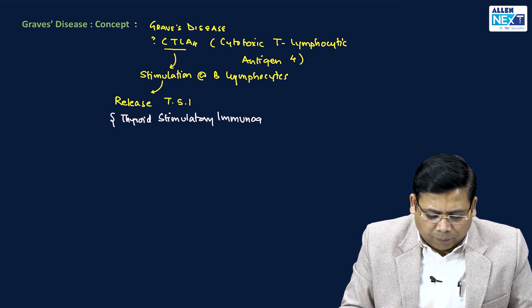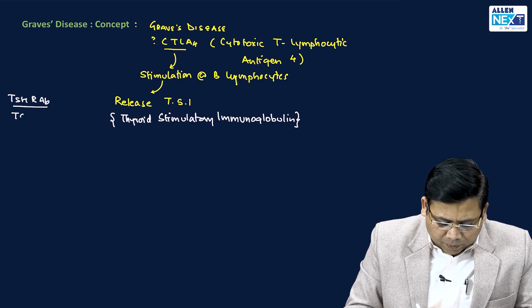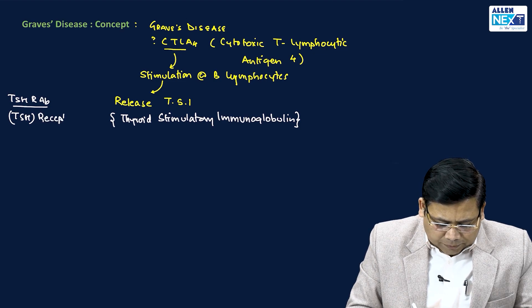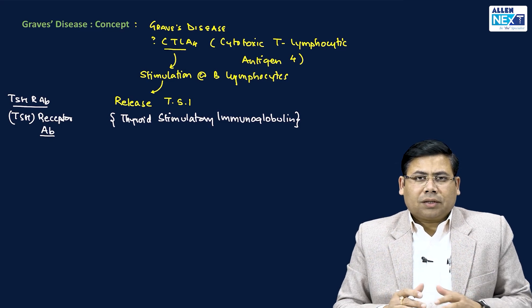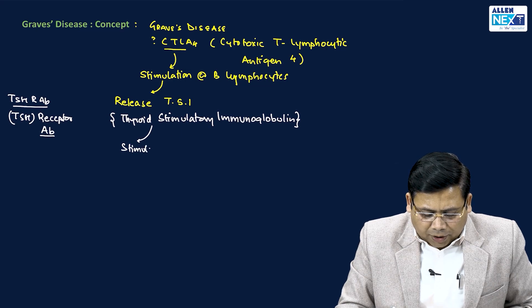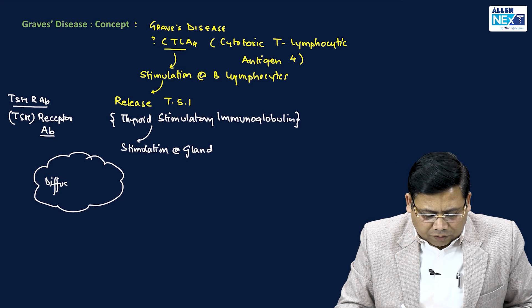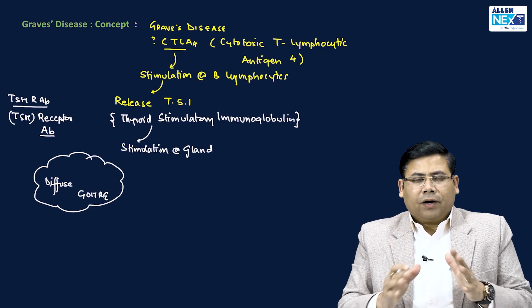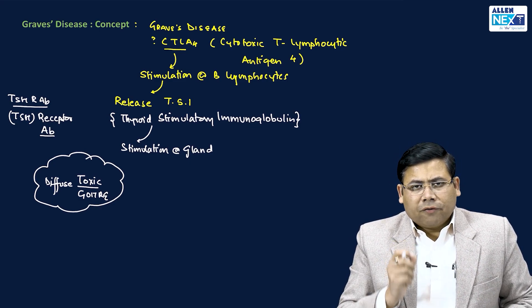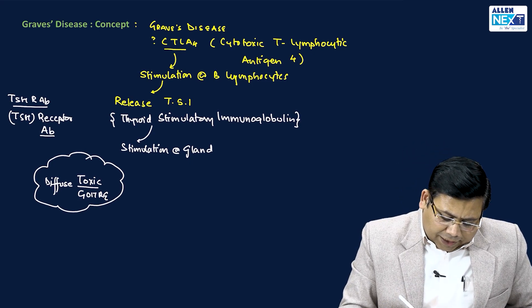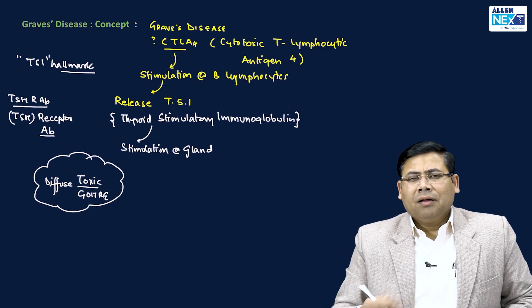TSI is also known as TSH-RAB — thyroid stimulating hormone receptor antibodies. These are gain-of-function mutation type antibodies that stimulate the thyroid gland, causing diffuse stimulation of the entire gland. Since there is diffuse stimulation, the gland increases in size, producing a diffuse toxic goiter. TSIs are the hallmark of Graves disease — if TSI is not present, it could be anything but not Graves disease.